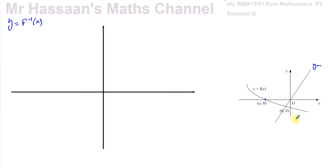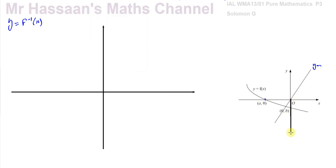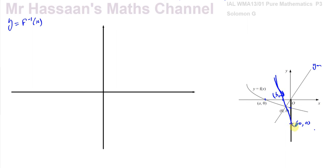So the point (a, 0) — and note that a is a negative value since it's on the negative side of the x-axis — is now going to become the point (0, a), down here. And the point (0, b) is now going to become (b, 0). So the reflected graph goes through these two points.